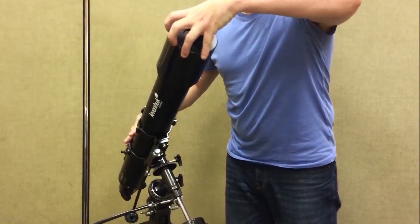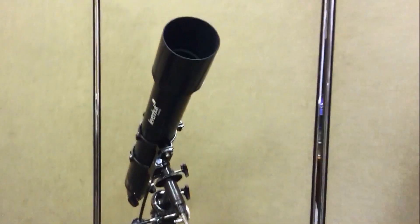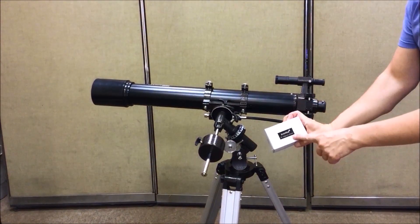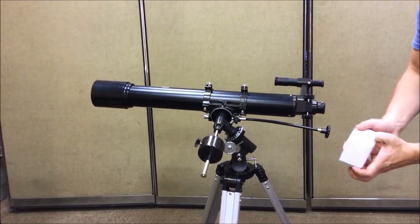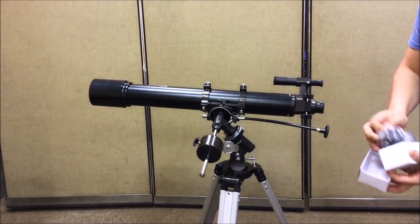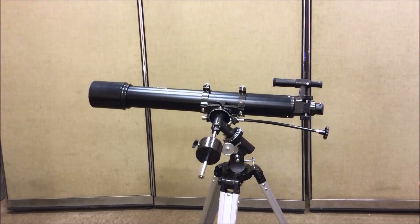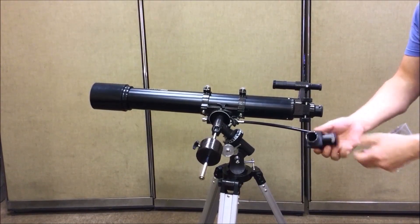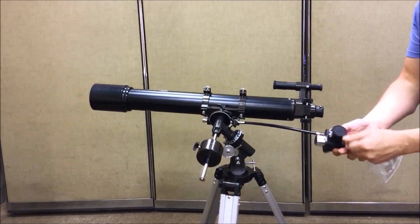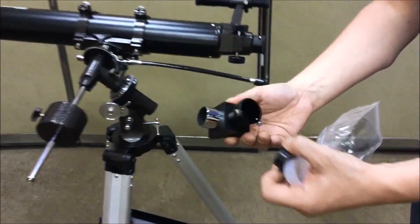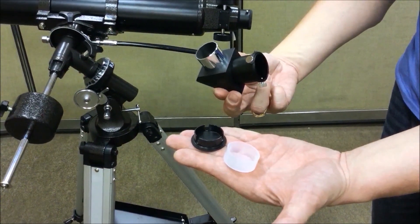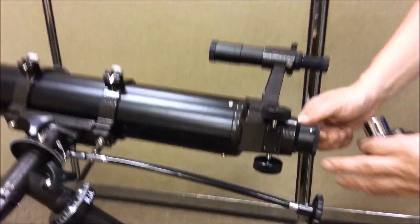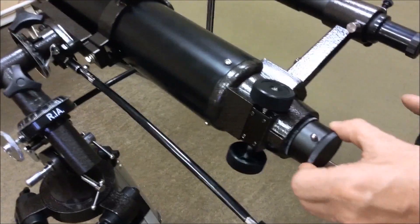Before starting your observations, don't forget to remove the dust cap from the front lens of the telescope. Take the diagonal mirror out of the accessories box. Remove it from the package. Take off the protective caps.